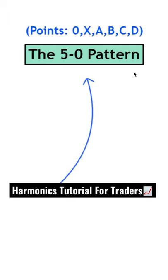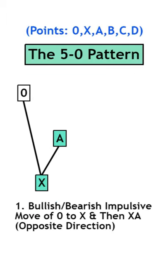We'll be covering the 5-0 pattern, which has 6 points in total. First, let's begin with a bullish or bearish impulsive move from point 0 to X, followed by a move in the opposite direction from point X to A.